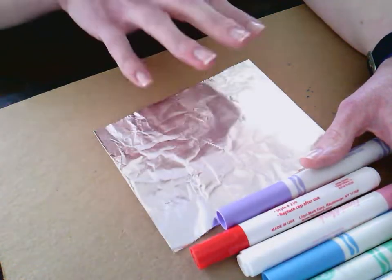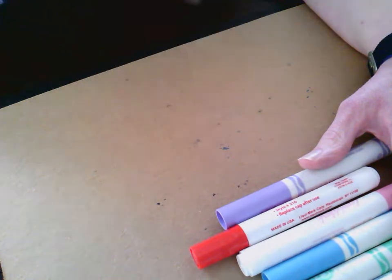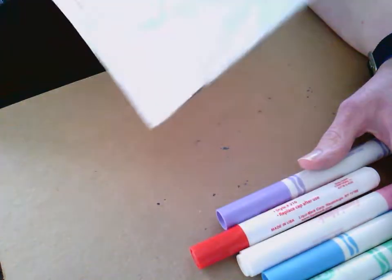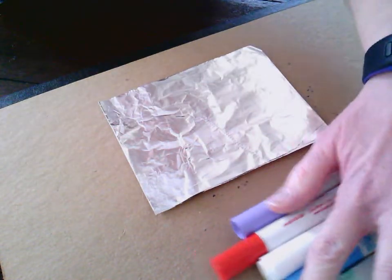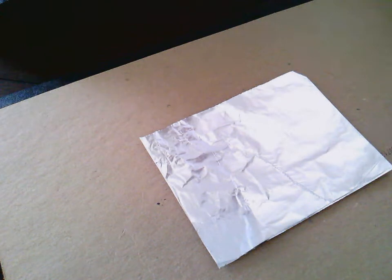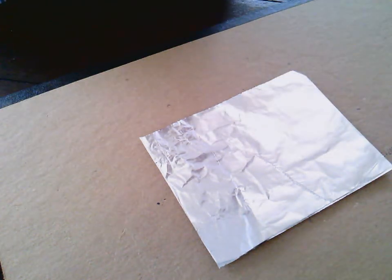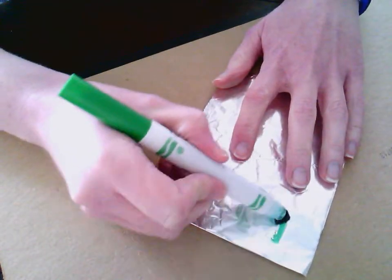And then I got a piece of aluminum foil or tin foil. I folded it over so it was more than one thickness. Now this you will need a paint brush for. We're going to kind of do a watercolor painting using the water-based markers.